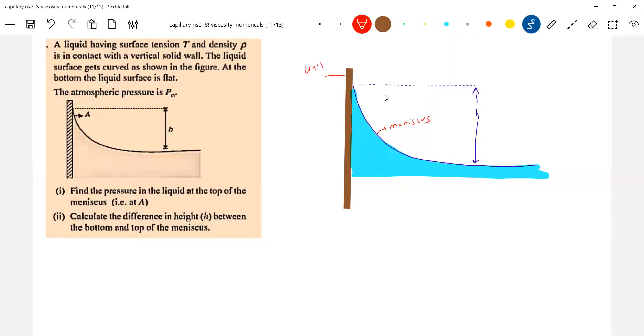There's a wall. It's asking first find the pressure in the liquid at the topmost point here. Let me call this 1 and let me take this as 2 inside the liquid. Pressure at 3 should be P naught because the meniscus is flat here. As it is flat here, therefore P3 equals P2.